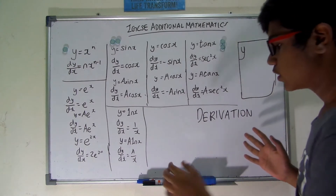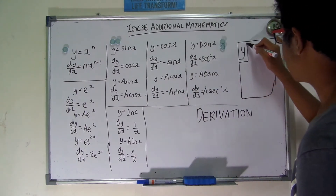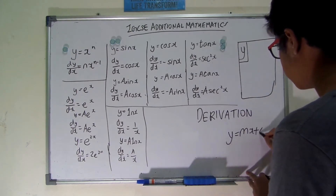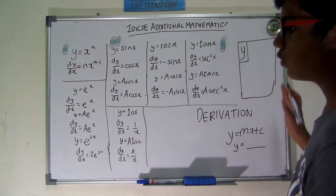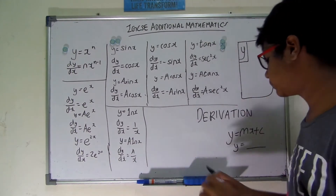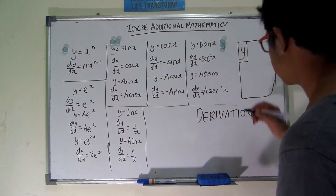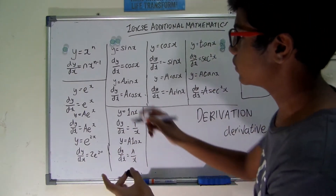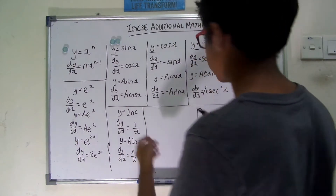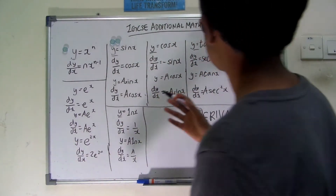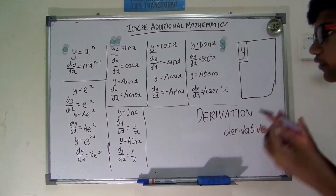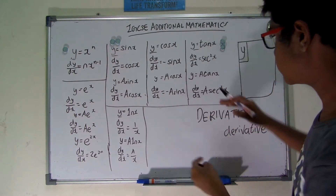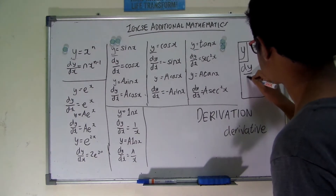In IGCSE Additional Mathematics we have differentiation. For the sake of this video, I'm going to assume that all functions I differentiate in this first part are called y. It could be something like y equals mx plus c, or y equals any function — any combination of algebraic expressions. The derivative of y is the differentiated version of that y function.